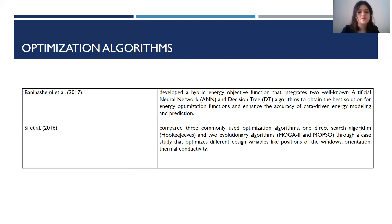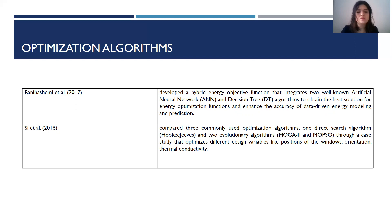In the last study, three common optimization algorithms were compared: one direct search algorithm and two intelligent algorithms, through a case study. In the case study, they optimized different design variables like window position, orientation, and thermal conductivity. These three algorithms were compared across different performance indicators like stability, relative speed, and coverage. It was concluded that no algorithm performs best in all areas, and therefore the algorithm must be carefully selected according to the nature of the problem and the design variables.